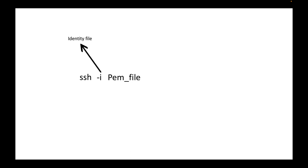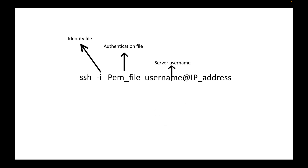After the hyphen I flag, we specify the PEM file, which is your authentication file — it's like a password. We are telling SSH that it can use this PEM file to connect to the server. After that, we need to give the username and the IP address of the server — the Linux server username and the server IP address that you want to connect to.